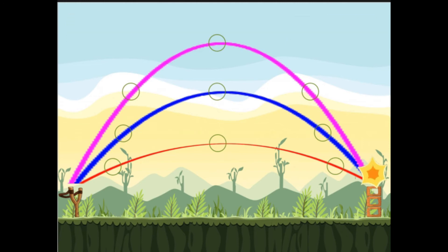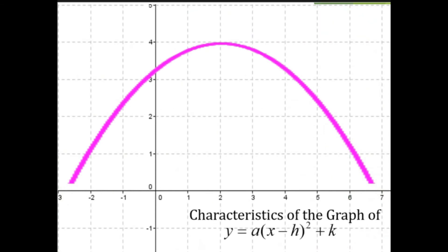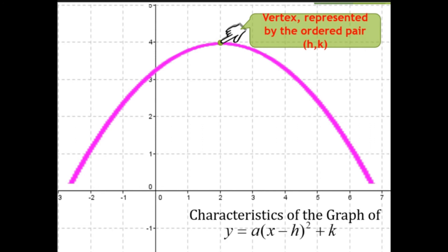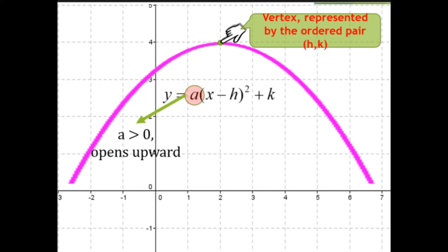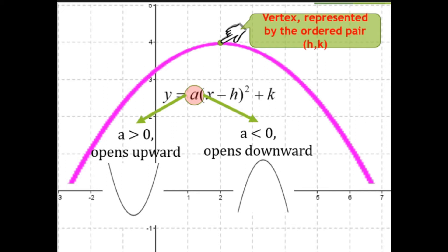You are now ready to graph quadratic functions. Let us describe the characteristics of the graph of y = a(x - h)² + k. The vertex is represented by the ordered pair (h, k). The value of a tells us the opening of the graph: if a is greater than zero, the parabola opens upward; if a is less than zero, the parabola opens downward. If it opens upward, the vertex is the minimum point; if it opens downward, the vertex is the maximum point.